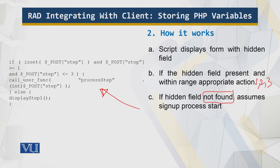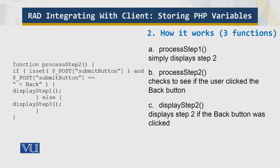There are three process functions to look at. Process step one simply displays step two. Process step two checks if the user clicked the back button, and then displays step two if the back button was clicked. You can see the code for process step two and what is happening with the back button logic.